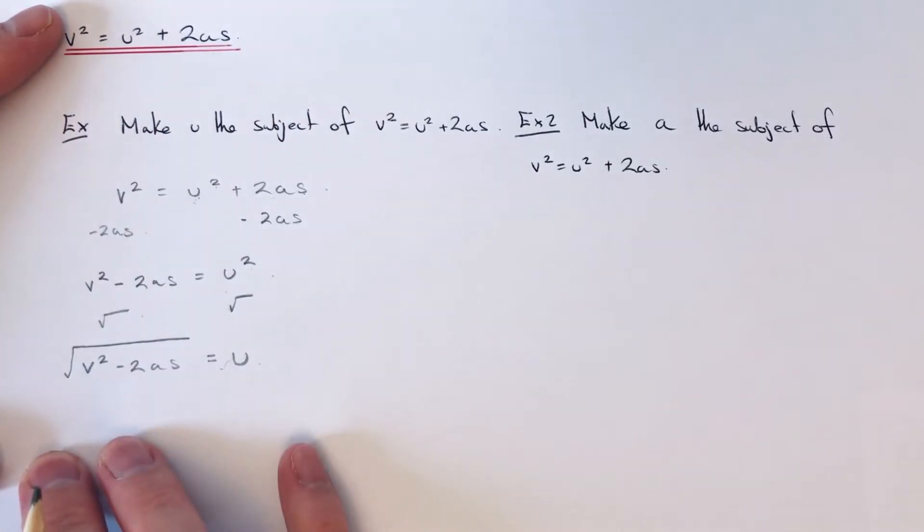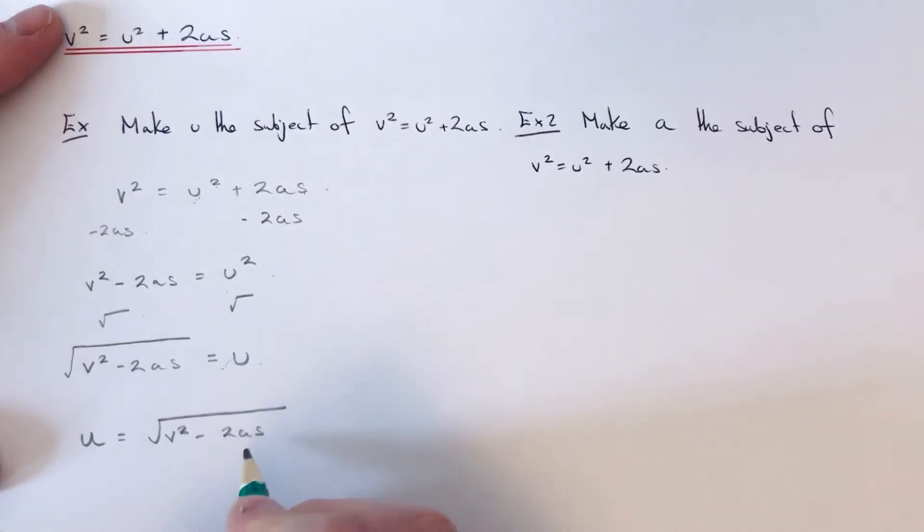It's nice to have the u at the start of the formula rather than at the end, so I'm just going to rewrite the formula. Some people put this in a bracket so we know we've got the whole lot being square rooted. Let's move on to the second example.